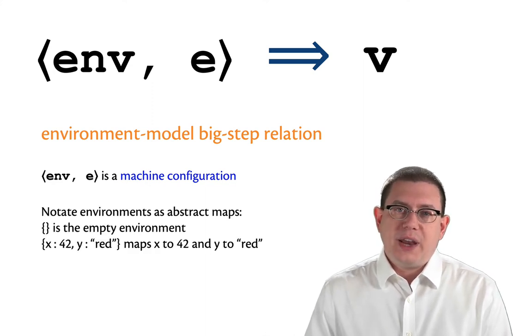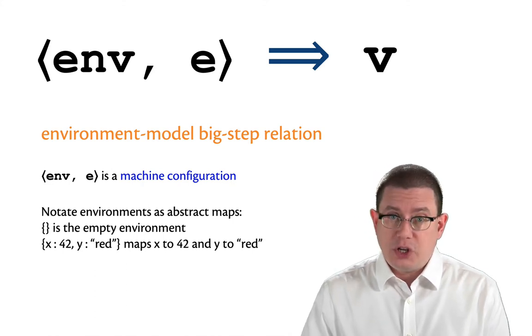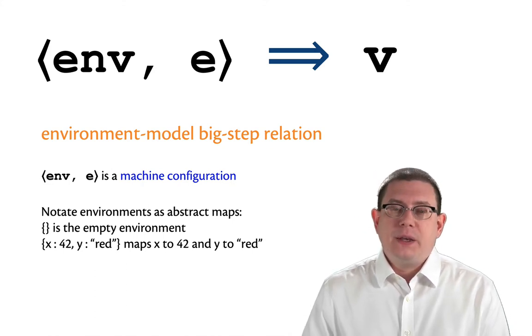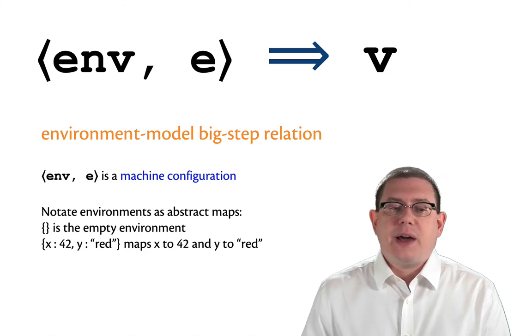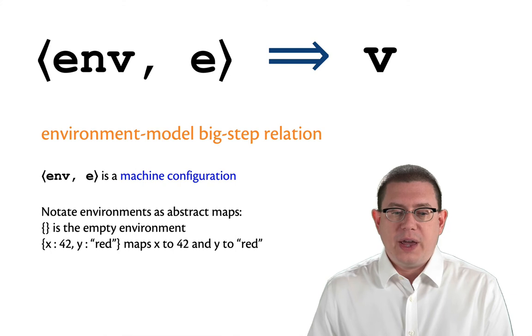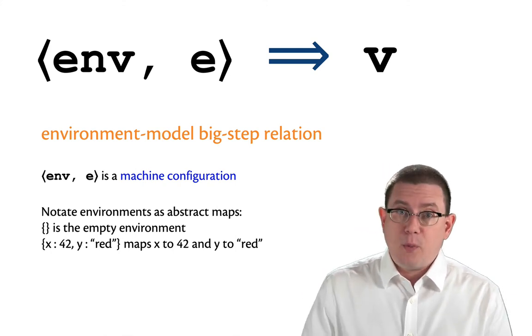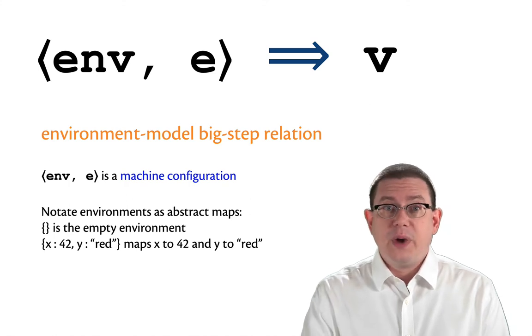Environments we will treat abstractly as maps. So we already have a notation for that and I'm just going to use that abstract notation again. So curly braces will be the empty environment and then if I have x colon 42 and y colon red, that would be the environment that maps the variable name x to the value 42, the variable name y to the value the string red.